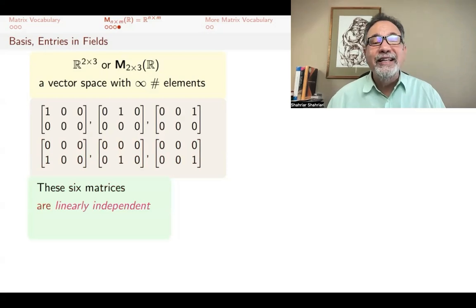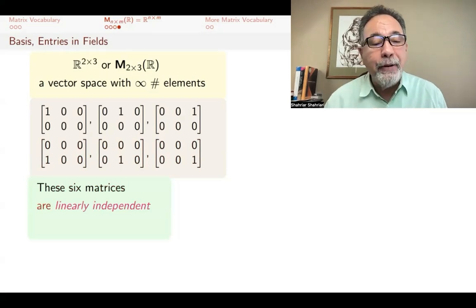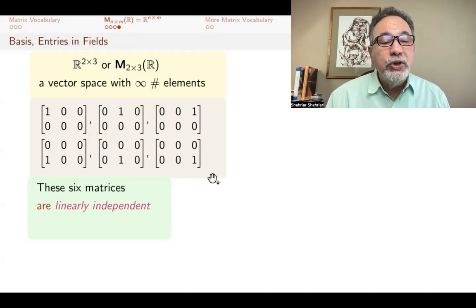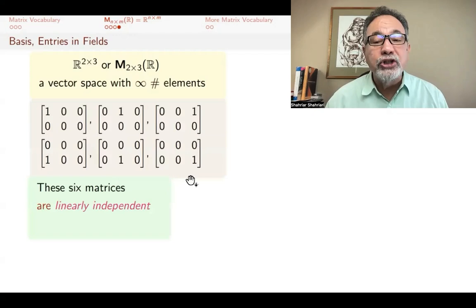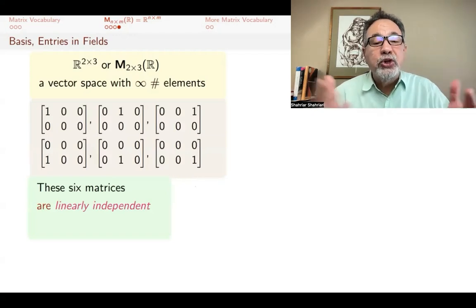These six matrices are linearly independent. We have a whole video coming up on linear independence. But intuitively, what that means is that you can't get any one of these from the other ones using vector space operations. By addition and scalar multiplication, you can't combine some of these and get another one.